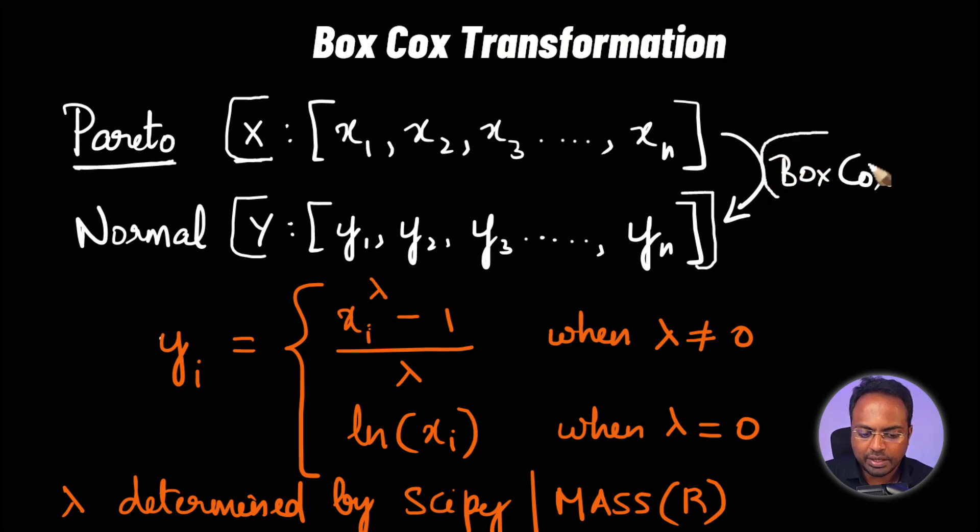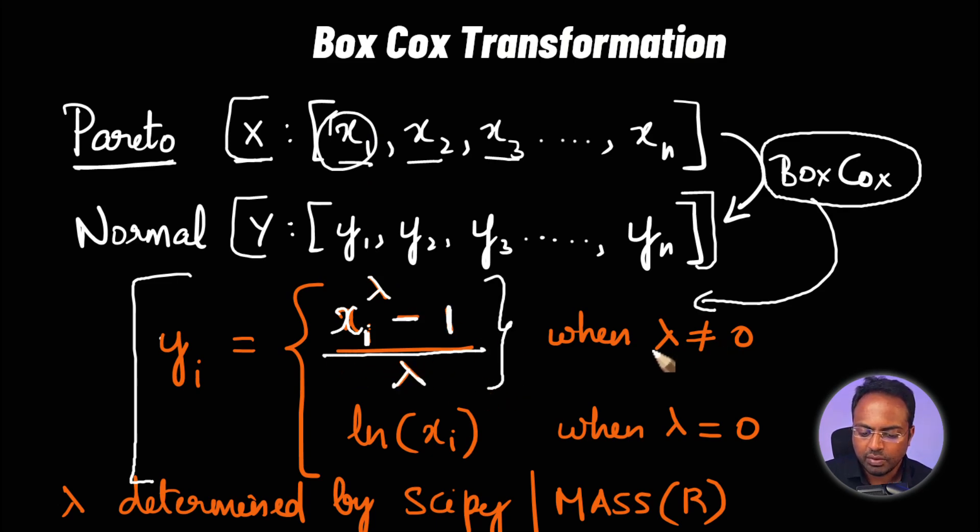But what is happening here? Basically, it is the application of this particular formula. You have the various values of x here, x_i, that is x1, x2, so on and so forth. For each of these values, raise it to the power of lambda, reduce it by 1 and divide again by lambda. You do this whenever lambda is not equal to 0. But if lambda turns out to be equal to 0, simply take a natural log. This is the whole formula behind Box-Cox transformation.